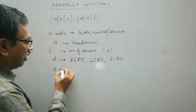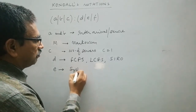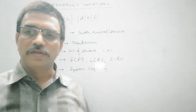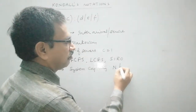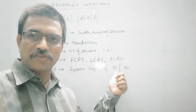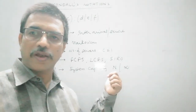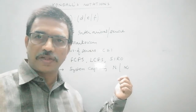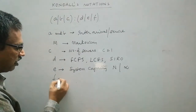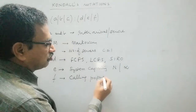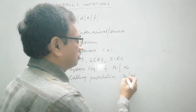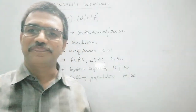Next, E represents the system capacity — the capacity for accommodating a number of customers. This system capacity may be finite or infinite. If the system has a limited capacity, then we will express it by N, where N expresses the number of customers which the system can accommodate, or if there is no restriction on the number of customers in the queuing system at any point of time, then it may be taken as infinite. And F represents the calling population or the source from which customers are generated. This may also be finite or infinite.